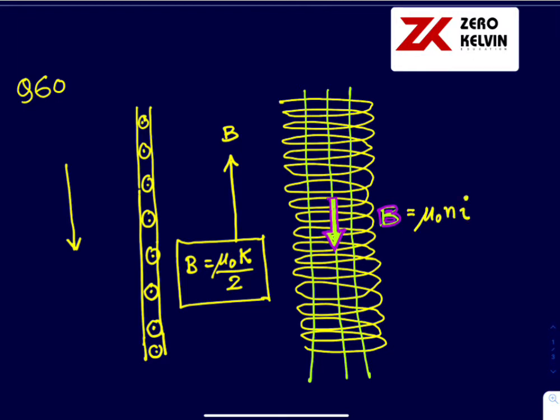And this is a sheet carrying current K per unit width. So this is the magnetic field due to the sheet. We have derived it before by Ampere's law.